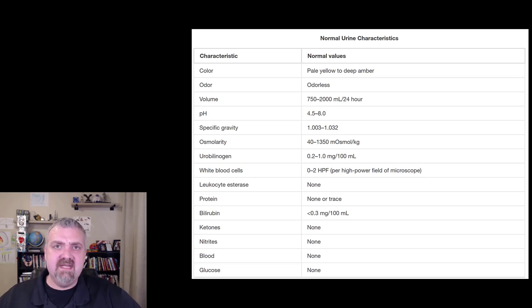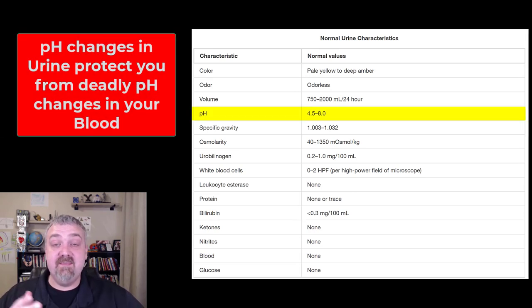Volume, we've already mentioned that's going to be determined by hydration or some disease states. pH, pretty interesting. You see a pretty wide range there. The normal pH of urine can be from 4.5 to 8. That's going to be like a thousand-fold difference. So why do we see such huge changes in pH?